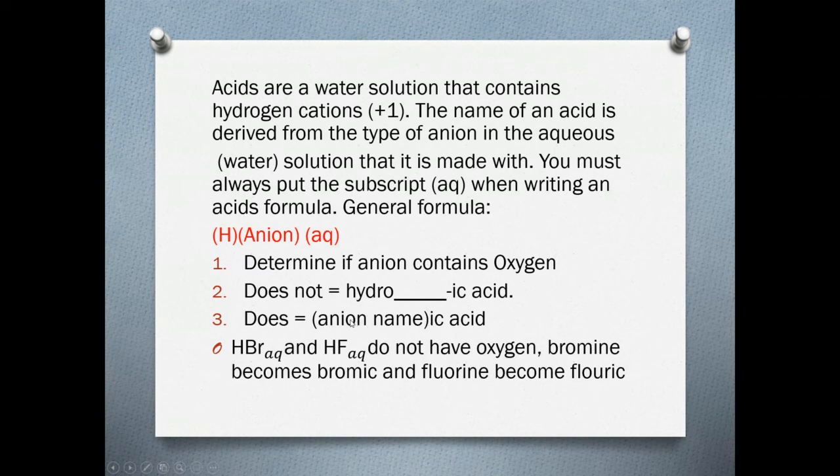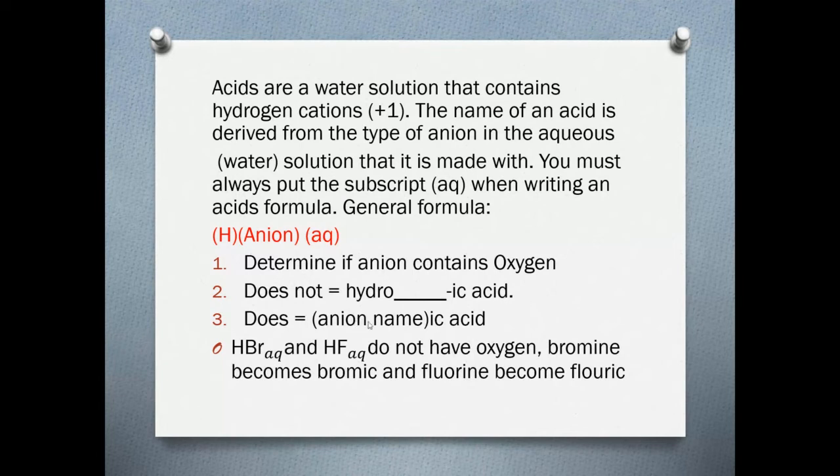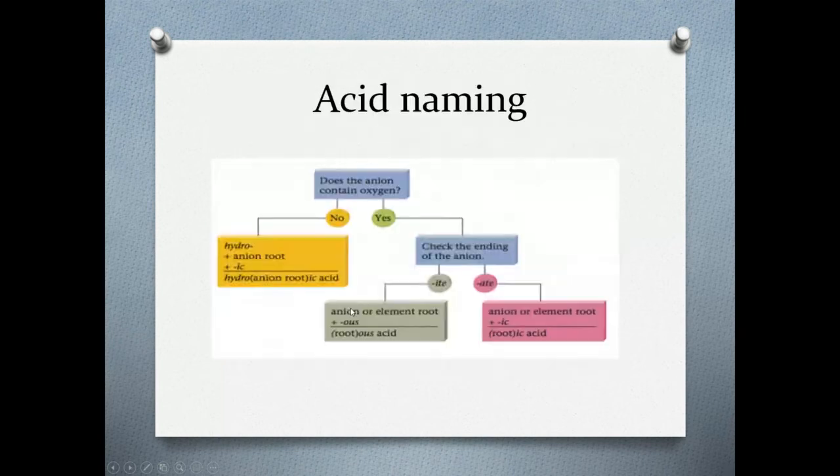If it does have oxygen, we don't deal with the hydro anymore. We just have the anion name with the IC and the acid, such as sulfuric acid for example. Sulfuric acid does have oxygen in it because it's made with hydrogen and sulfate. So we don't use the hydro prefix. That's the only two rules that we really have to worry about in terms of naming.